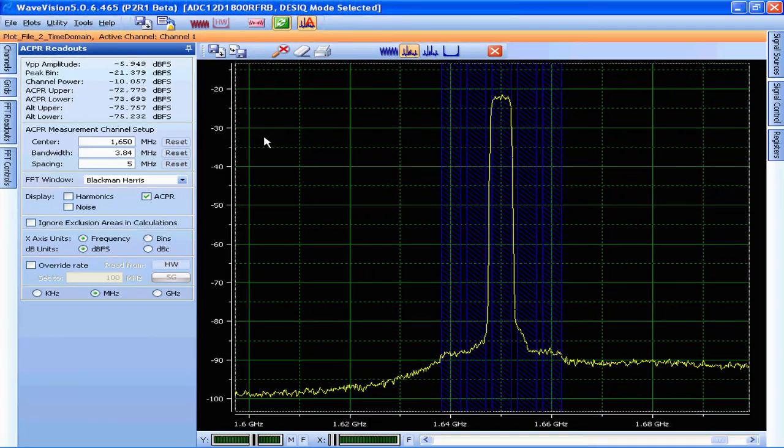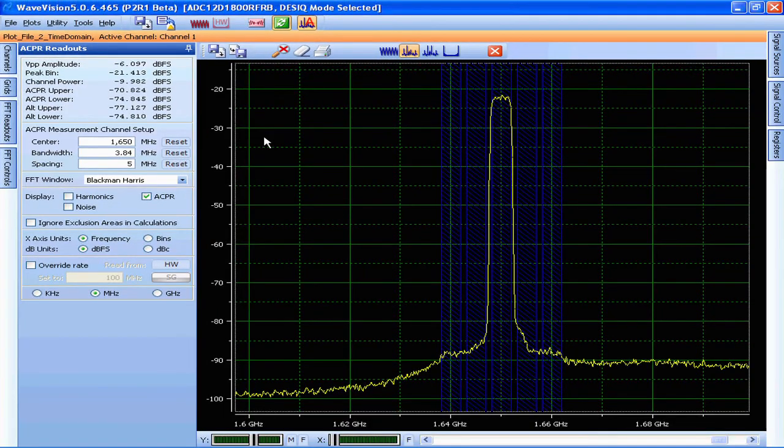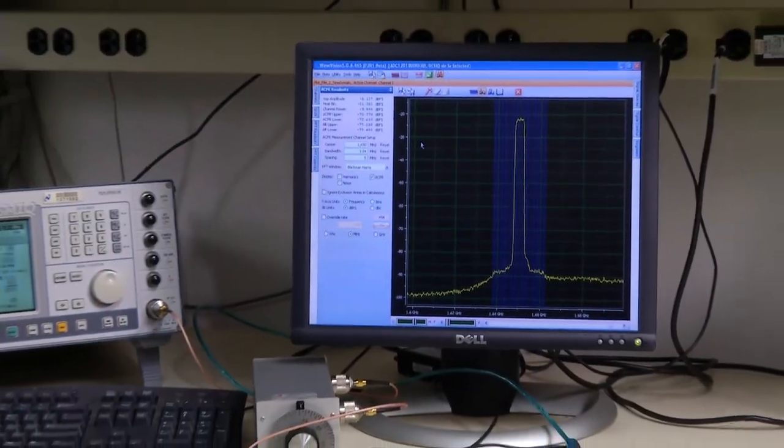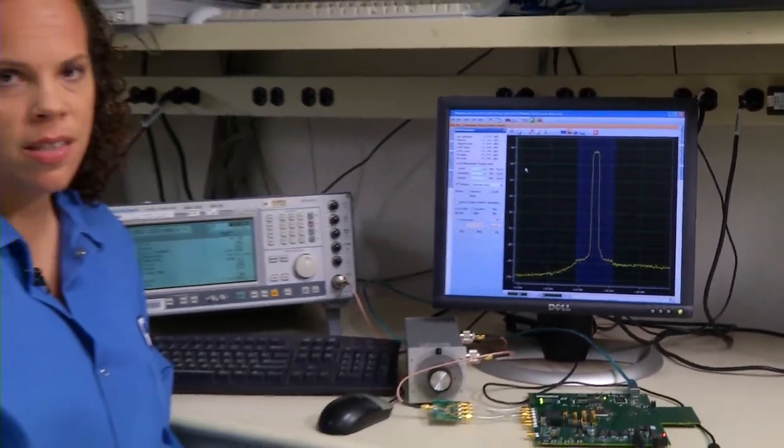So in summary, we've been able to see how to measure ACPR for a wideband communications application, which is very important in order to be able to tell how a signal may interfere with a neighboring communications channel. Thanks very much for watching. You can find more information at the following URLs.